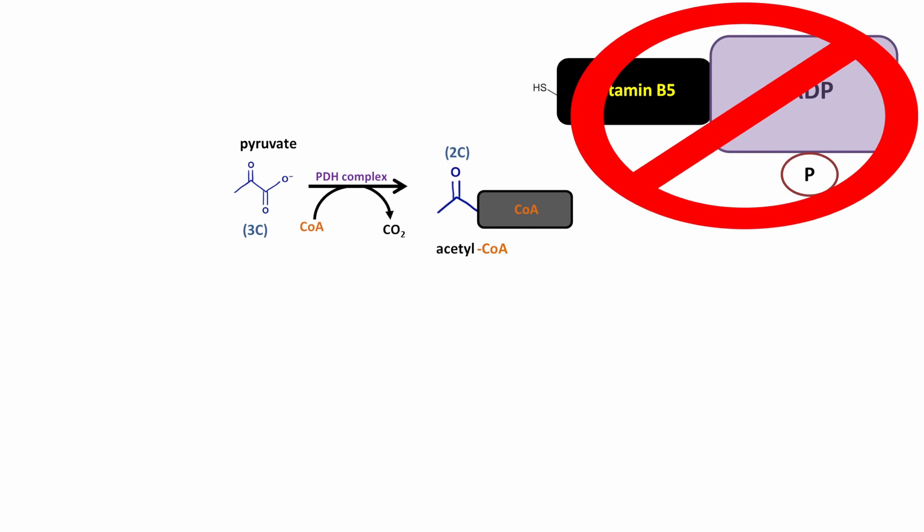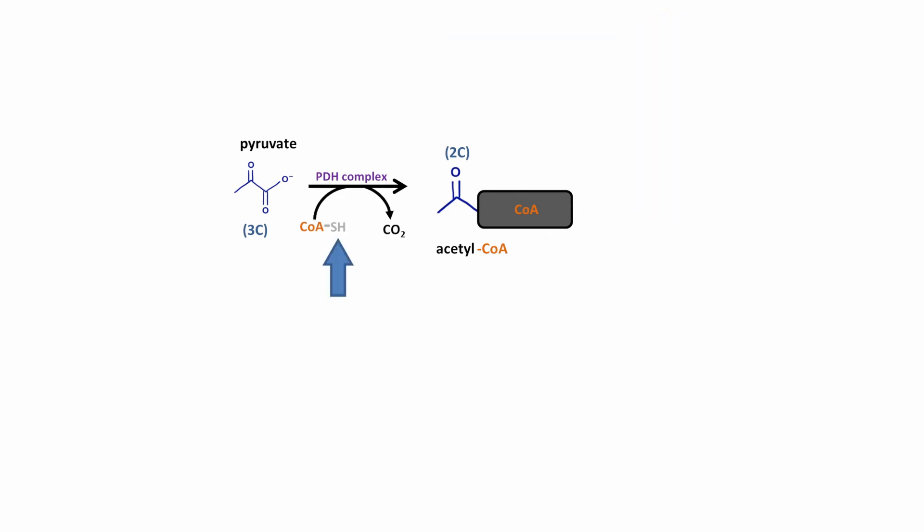The important part of the coenzyme A molecule is this little sulfhydryl group right on the end, because that's the reactive end where it's going to attach with the acetyl group. And that's why you'll see this molecule often abbreviated as co-ash, and when we draw a picture of acetyl-CoA, oftentimes you'll see the sulfur group drawn in as well.